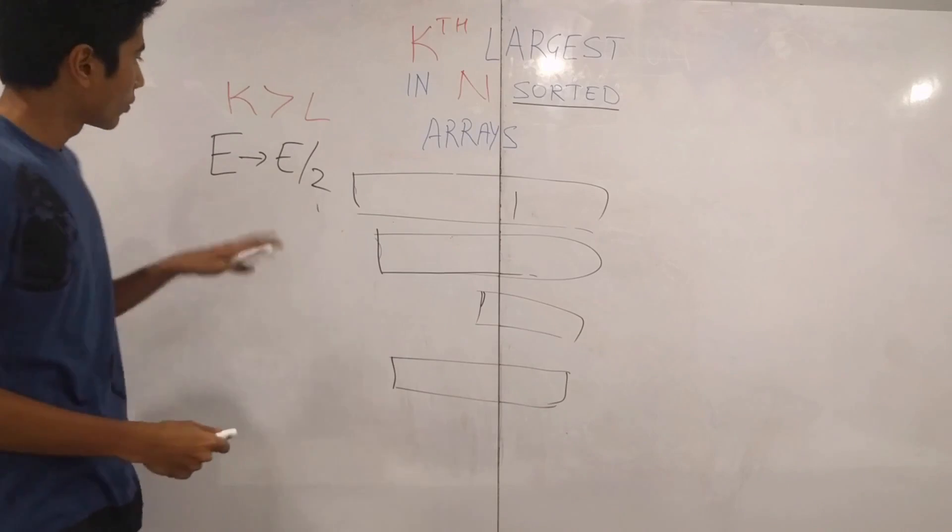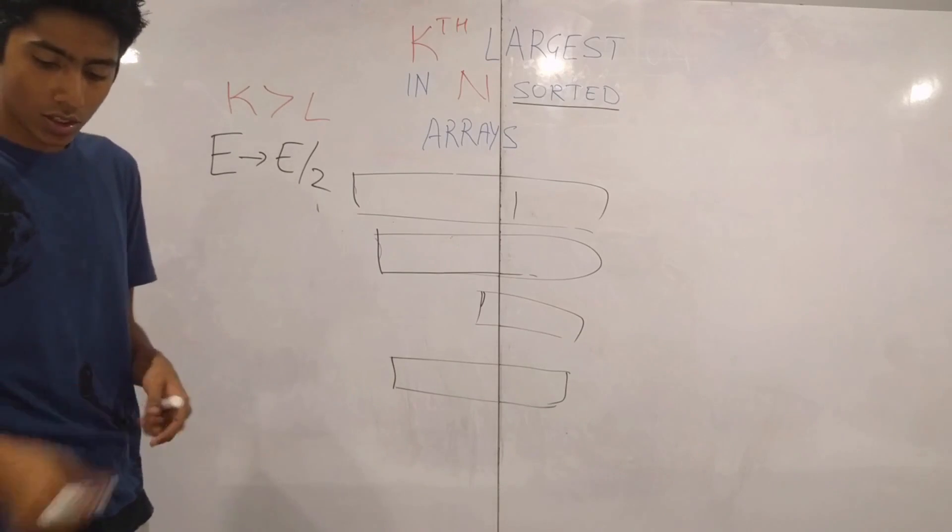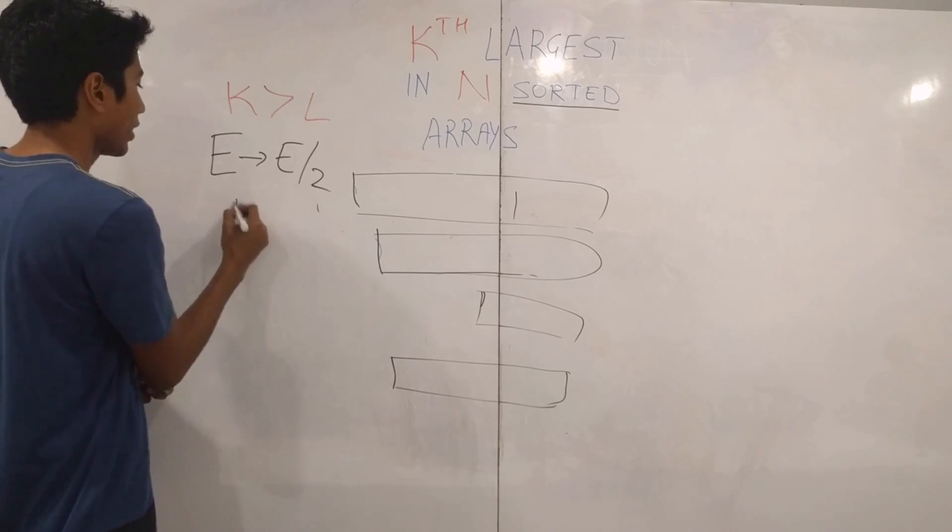So if you had e elements in the start and you are removing half the elements from each array, then in n operations you will have e by two elements only. At most you can have those many elements after n chops of the largest. So we went to e by two elements. So we went to e by two in just n operations.